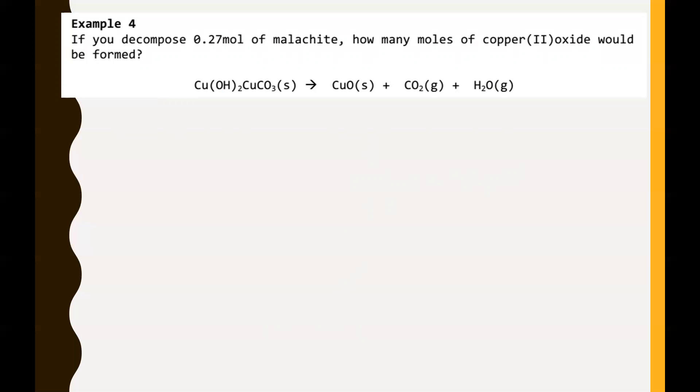We got one more example here. If you decompose 0.27 moles of malachite, that's what this guy is right here, remember that from our malachite lab that we did back in October. How many moles of copper oxide would be formed? Copper oxide is this guy right here. We know we have 0.27 moles of this guy. It's asking how many moles of copper oxide will be formed.